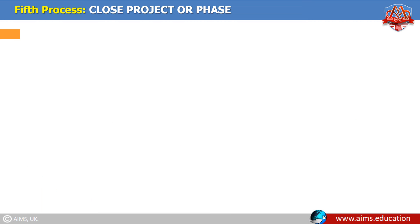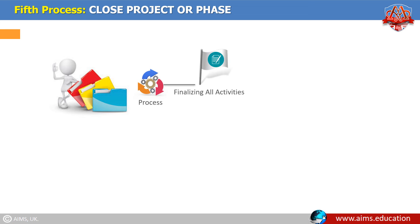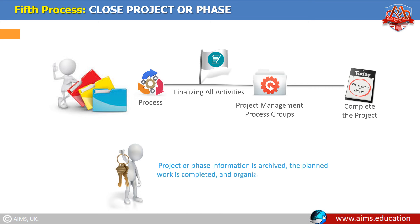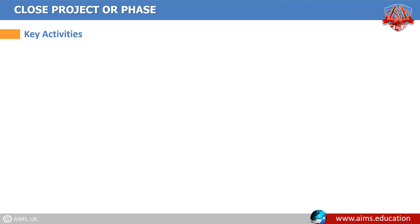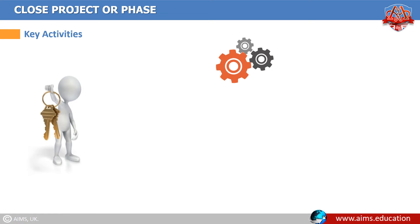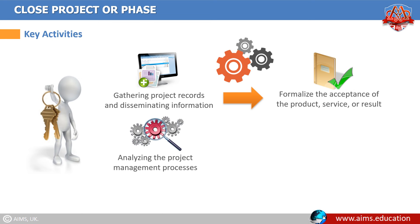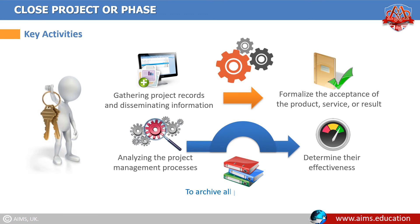Fifth process: close project or phase. It is the last phase of the project life cycle. This process finalizes all activities across all of the project management process groups to formally complete the project or phase. Key benefit: project or phase information is archived, the planned work is completed, and organizational team resources are released to pursue new endeavors. Key activities include: project records are gathered and information is disseminated to formalize the acceptance of product, service, or result; project management processes are analyzed to determine their effectiveness; and project documents are archived for historical reference.